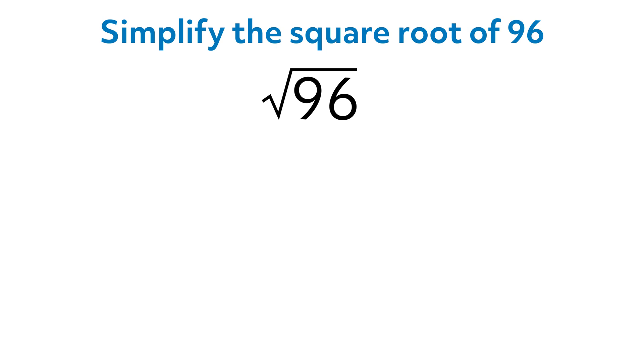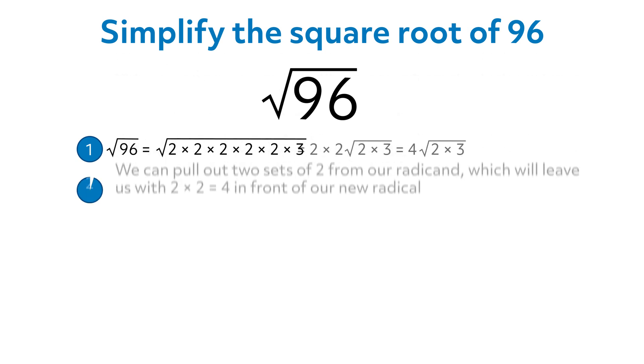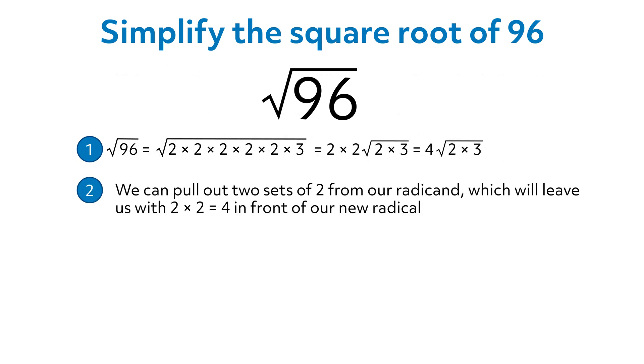Think you've got it? First, we need to find the factors of 96. It's easy to see the perfect squares when the factors are written in this form. We can pull out two sets of 2 from our radicand, which will leave us with 2 times 2 equals 4 in front of our new radical.